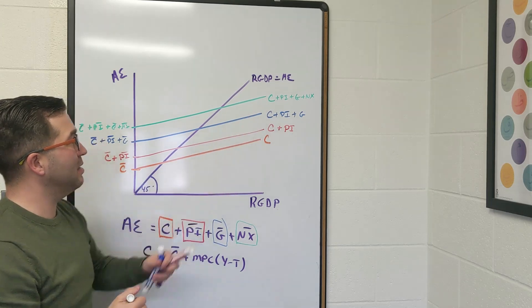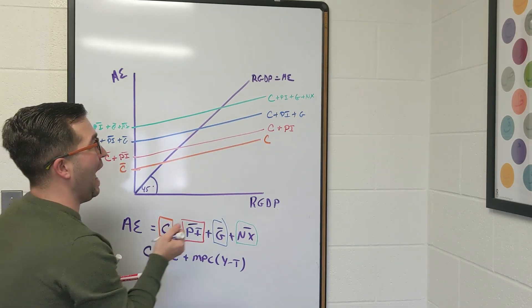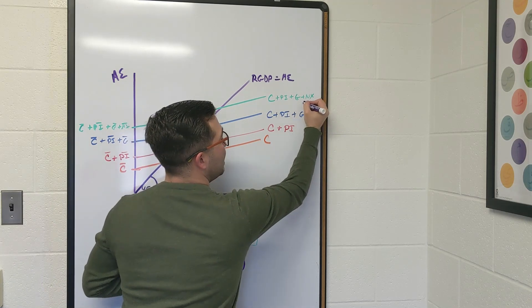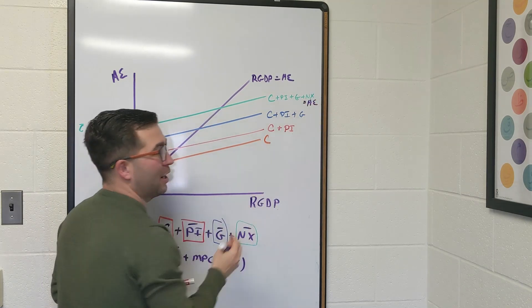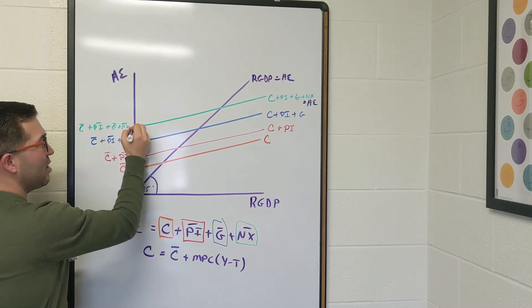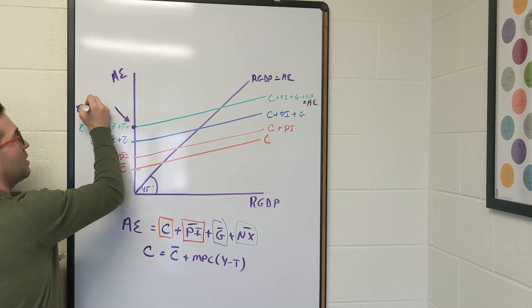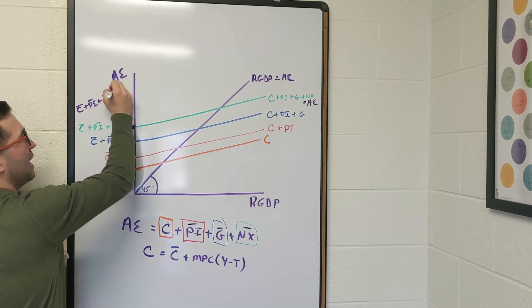And what exactly is this right here? Well, this ends up being the overall aggregate expenditure line. This is equal to aggregate expenditure.